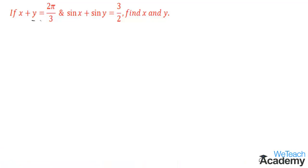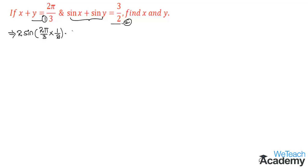Let us name both the equations as equation 1 and equation 2. In equation 2, on the LHS side, we can use the formula of sin C plus sin D. So we get 2 sin((C+D)/2) which would be x plus y divided by 2, and then by using equation 1, the value of x plus y is 2π/3, into 1/2 into cos((C−D)/2) which is x minus y divided by 2, which is equal to √3/2. Here 2 in the numerator and denominator gets cancelled.